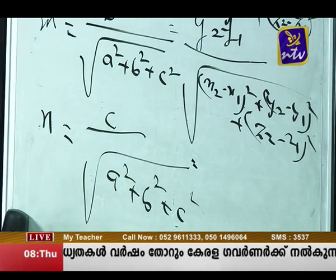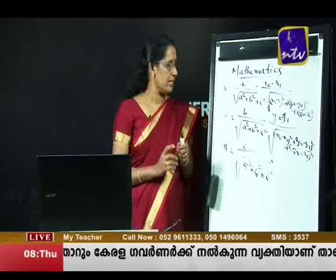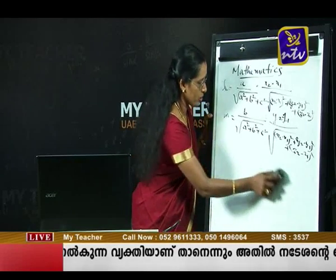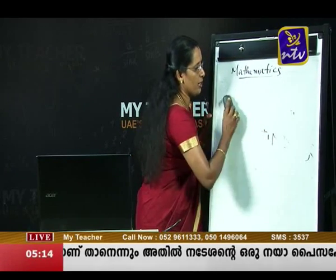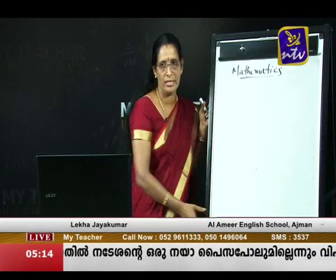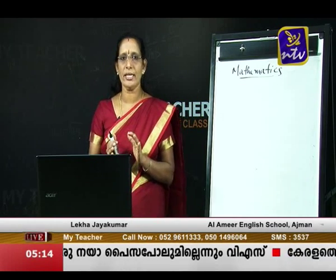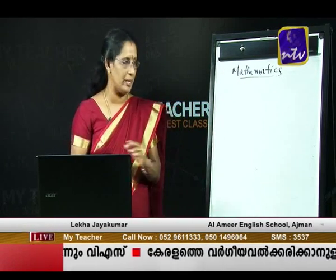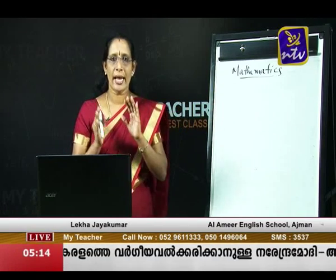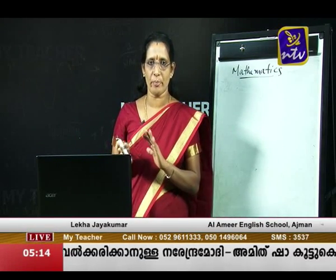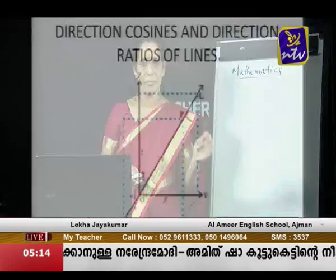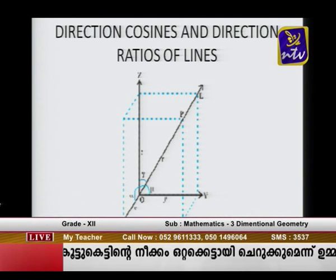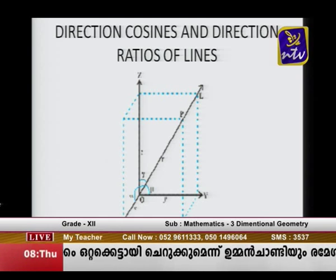What is the relation between the direction cosines and direction ratios? The relation is: L = A / √(A²+B²+C²), M = B / √(A²+B²+C²), and N = C / √(A²+B²+C²).